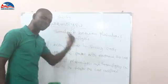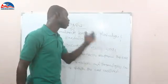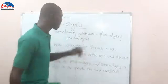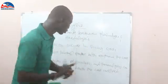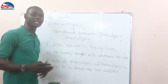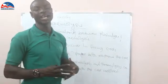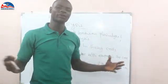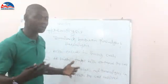Both plasmolysis and hemolysis occur in living cells — plasmolysis occurs in plants and hemolysis occurs in animals; all of them are living cells. That is similarity number one. Number two: at the initial stage, as water enters or since there is water in that cell, it can lead to the expansion of the cell, either the cell of the plant or the cell of the animal.